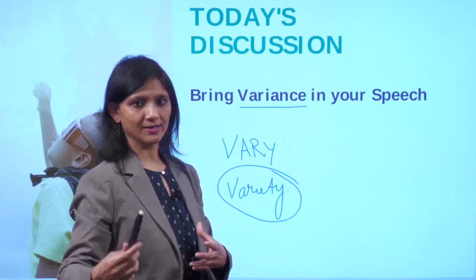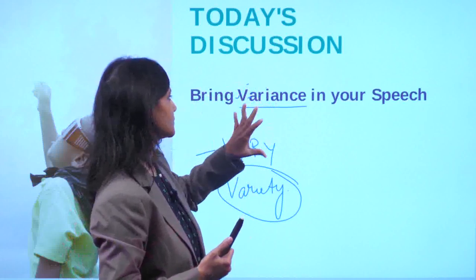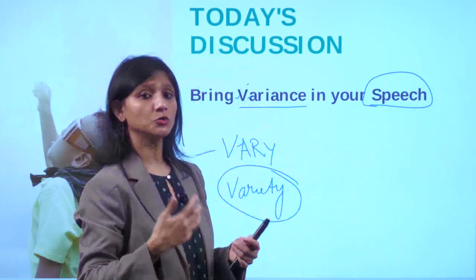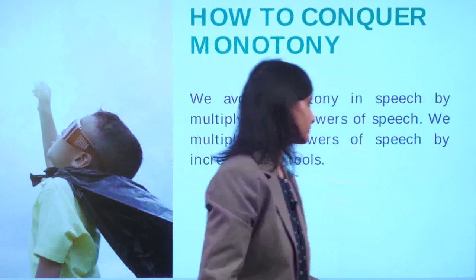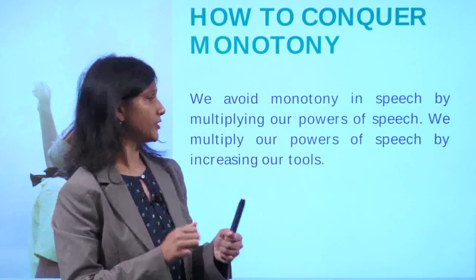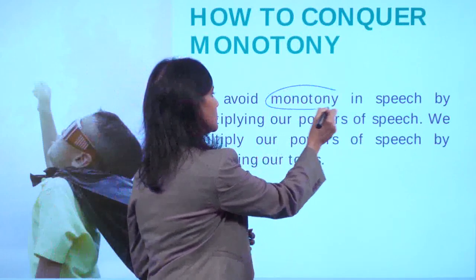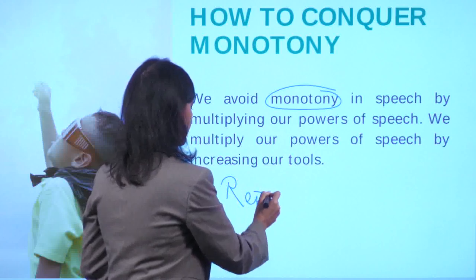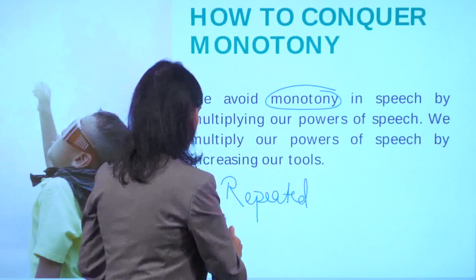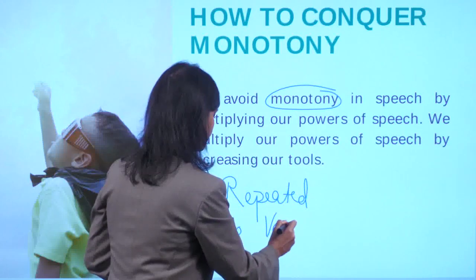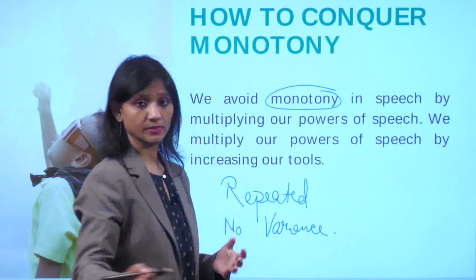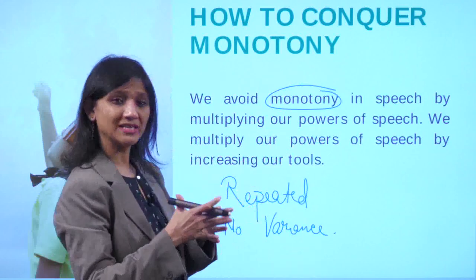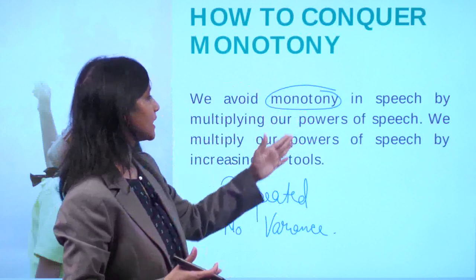So variance brings confidence. This variance is the variance you bring in your speech — how you deliver your speech. Now the opposite of variance is monotony. Monotony means repetition of the same thing — mundane. Variety is the order of life. We avoid monotony by multiplying our powers of speech.